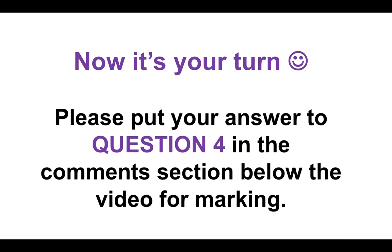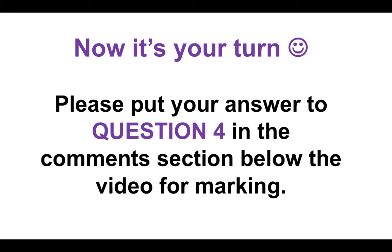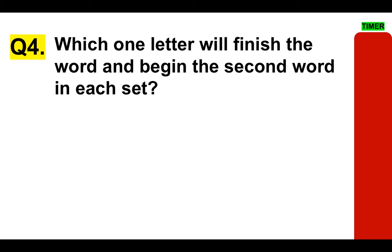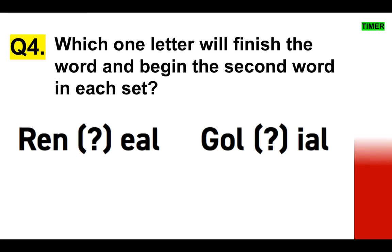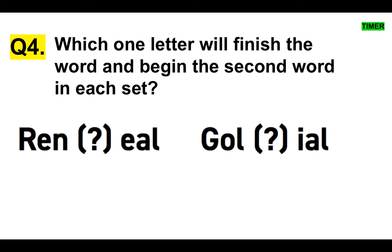Sounds easy — let's see how you get on. Please put your answer to question 4 in the comments section below the video for marking. I'll give you a little bit more time on this because it's more tricky. Which one letter will finish the word and begin the second word in each set? You've got R-E-N-something, something-E-A-L, G-O-L-something, and something-I-A-L. Don't forget to put your answer in the comments section below.